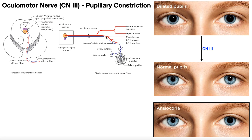Here's a summary picture of what we've covered. The Edinger-Westphal nucleus in blue is the parasympathetic part of the oculomotor nerve. After the bifurcation, it follows the lower division, then separates and becomes the ciliary branch, eventually entering the ciliary ganglion where it synapses with motor neurons that go to these muscles.